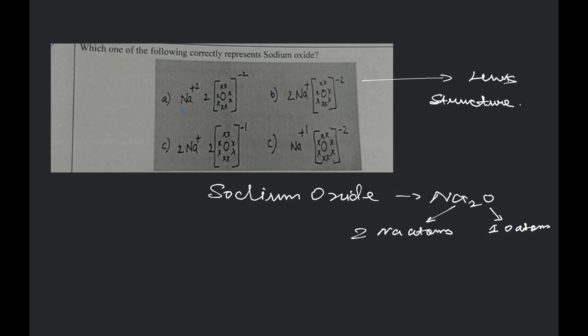So, basically, if you go for the first option, it is showing that there are two oxygen atoms. Two is written in front of oxygen. So, this is not correct. So, this is a wrong option. Two sodium is shown here only. This might be considerable. We have to consider this option.